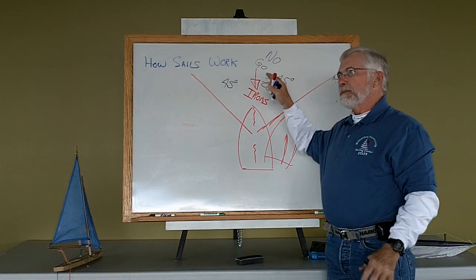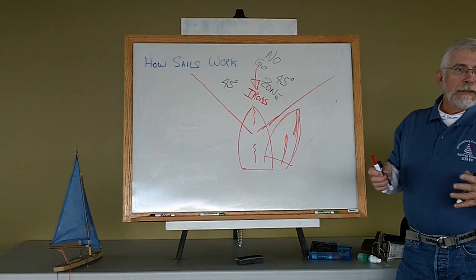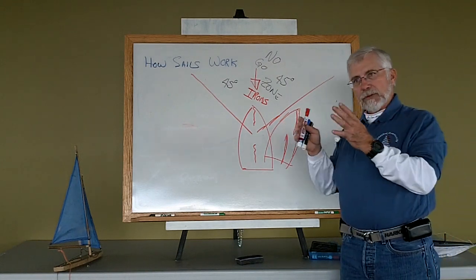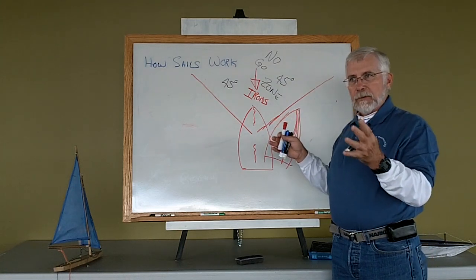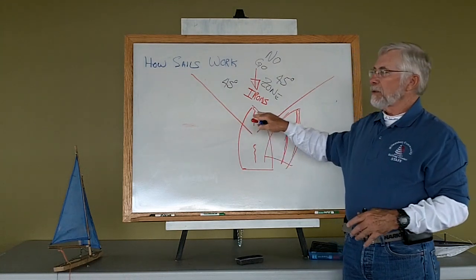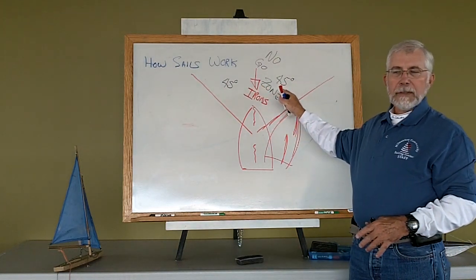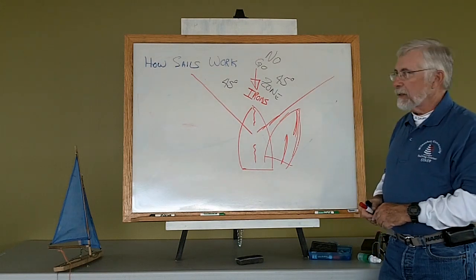Different boats have different no-go zone ranges based on their characteristics. Racing boats might have a no-go zone of 35 degrees on either side, while the day sailors we use typically have 45 degrees on either side where we can't get enough sail shape.